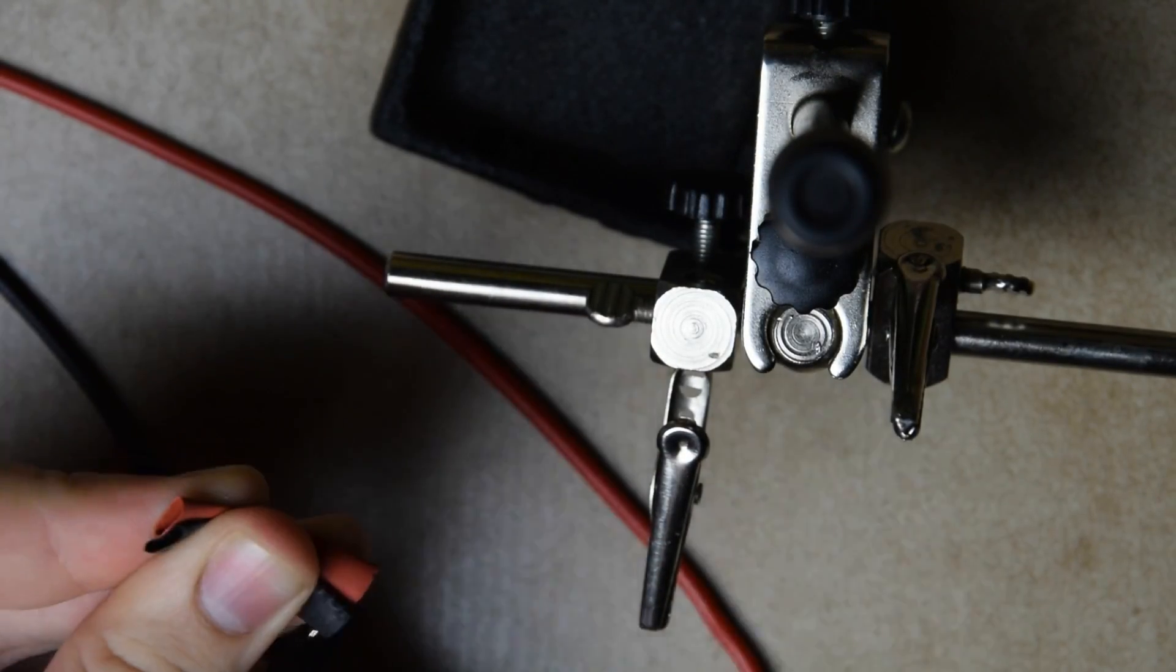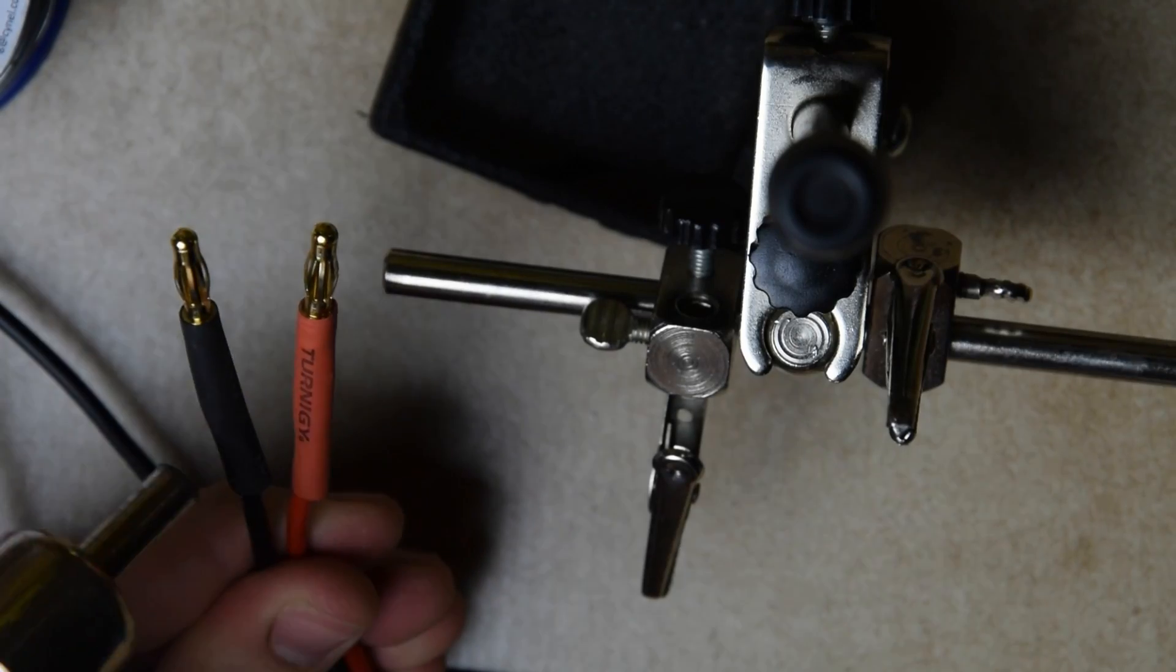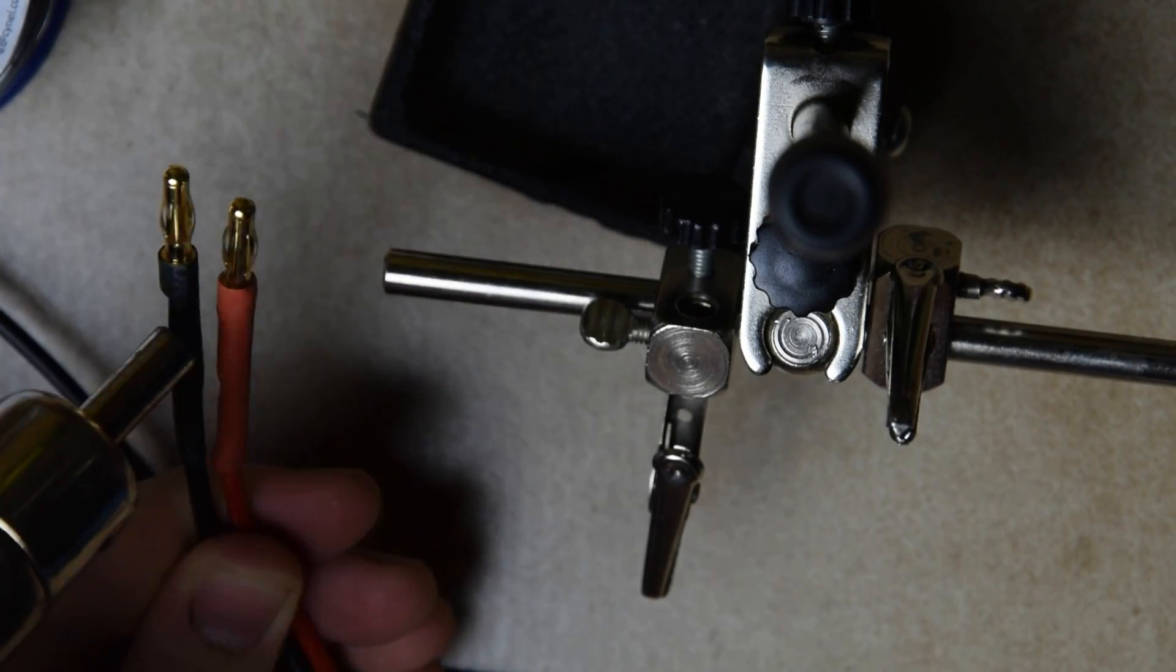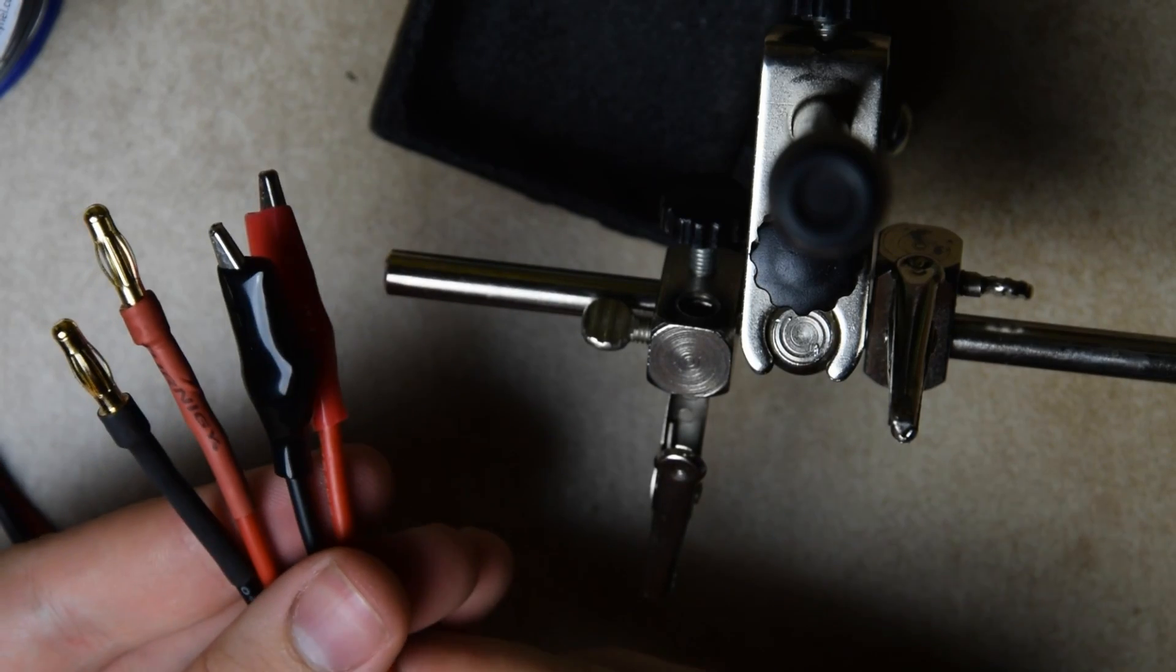The last step is to cover the bullet connectors with shrink tubing. This provides both better aesthetics and some mechanical reinforcement to the joint. After shrinking it we are ready for the test.